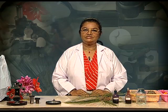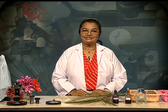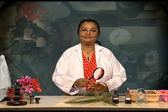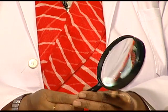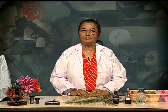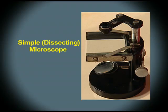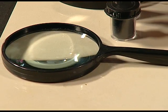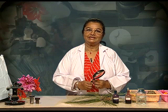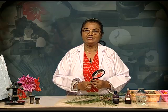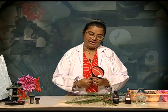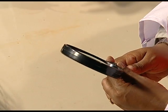We are going to look into three types of microscopes which are generally used in school laboratories. The first one is the hand lens. The second type is the simple microscope or the dissection microscope. The third type is the compound microscope. A hand lens is a convex lens that is used to produce a magnified image of an object.